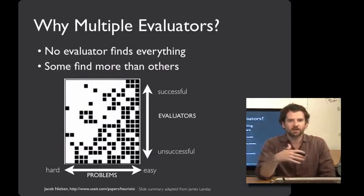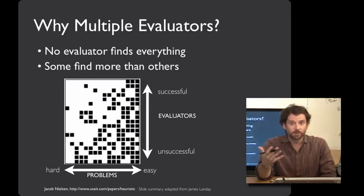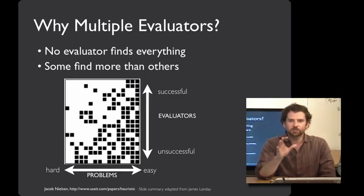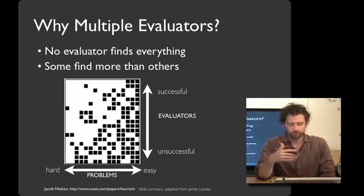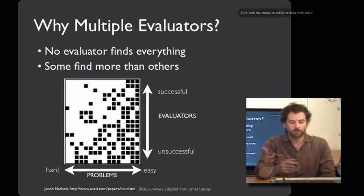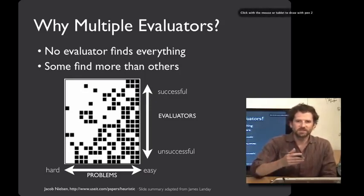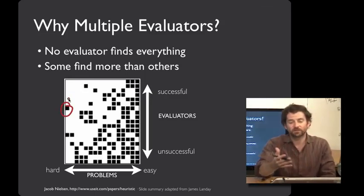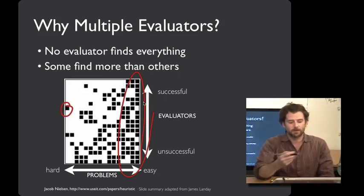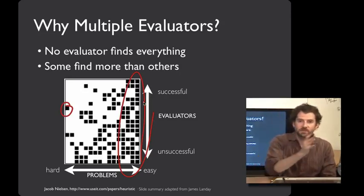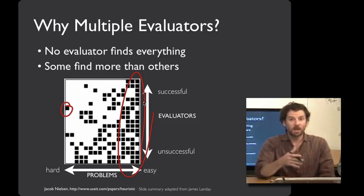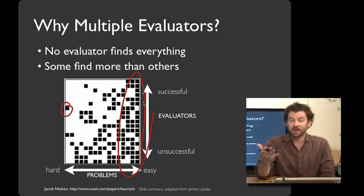Let's talk a little bit more about why you might want to have multiple evaluators rather than just one. The graph on the slide is adapted from Jacob Nielsen's work on heuristic evaluation. Each black square is a bug that a particular evaluator found; each row represents an individual evaluator, and there are about 20 evaluators in this set. The columns represent the problems. Some problems were found by relatively few evaluators, and other stuff was found by almost everybody — we call those the easy problems on the right and the hard problems on the left. In aggregate, no evaluator found every problem, and some evaluators found more than others — so there are better and worse people to do this.